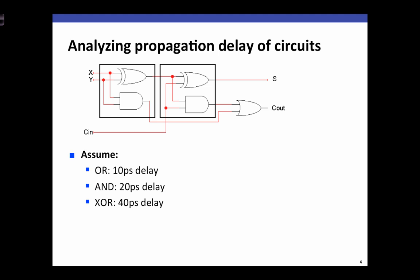Let's consider a more complicated example of computing propagation delay. Here I'm showing the full adder with inputs x, y, and carry in, and its outputs sum and carry out. We're going to make assumptions about the propagation delays of the individual gates — arbitrary numbers to make the example clean. OR gates take 10 picoseconds, AND gates have a 20 picosecond propagation delay, and XOR gates, because they're a little more complicated, have a delay of 40 picoseconds.